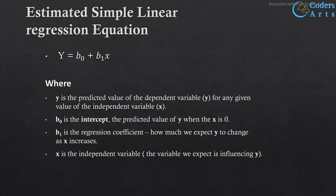The simple linear regression equation gives us y-hat, the estimated or predicted value of y for a given x value. Beta 0 is the y-intercept of the line and beta 1 is the slope. Now we have all the components needed to define a straight line — the slope and the y-intercept. We will show you an example of this in the next video. Thank you.